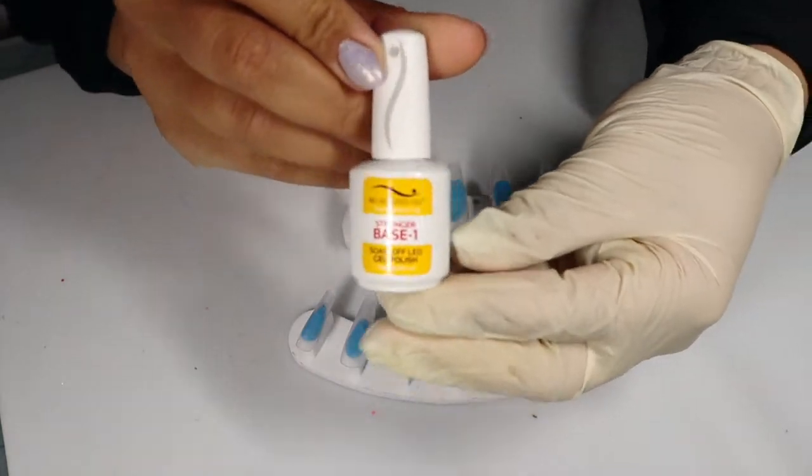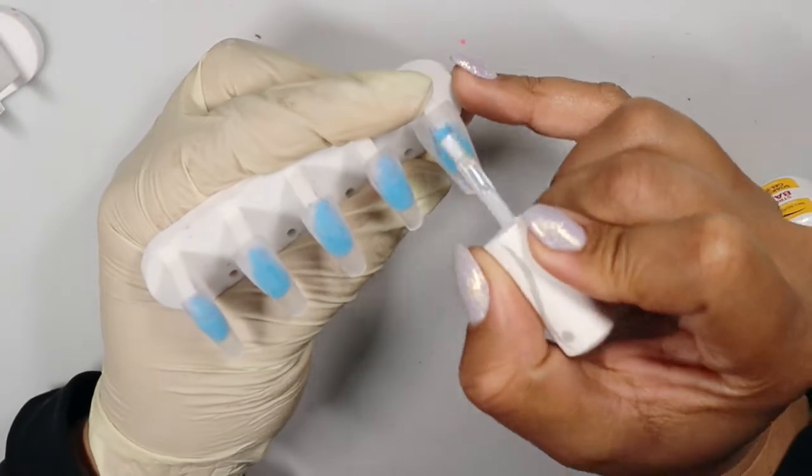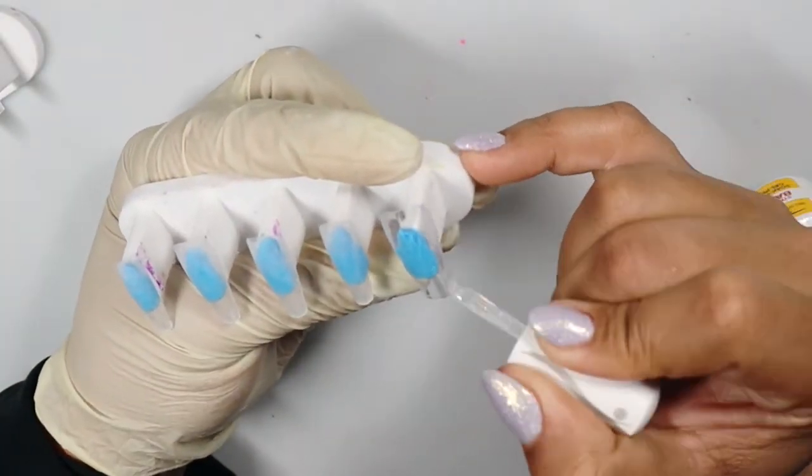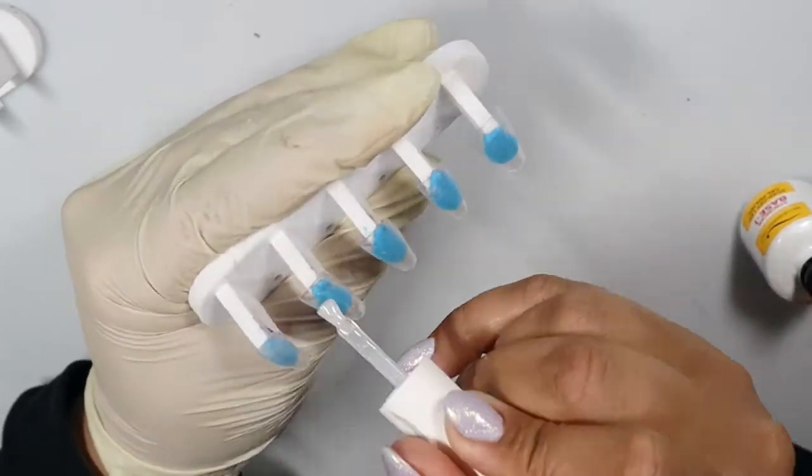So this is going to be a pretty quick tutorial. I'm going to go ahead and start with the Bio Seaweed Gel Stronger Base Gel and I'm applying that to buffed coffin shaped tips, so these are pre-buffed and I'm just slapping that base coat on and we're going to cure them for 60 seconds.